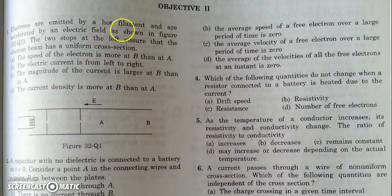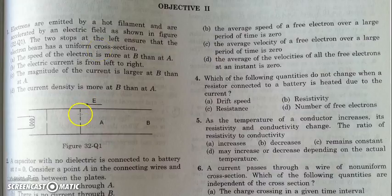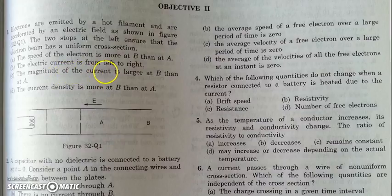In this video we will be discussing objective 2 of current electricity from HC Verma. In the first question, electrons are emitted by a hot filament and accelerated by a field toward the right, so the current is toward the left — opposite to electron flow. Since the beam has a uniform cross-section, all ejected electrons reach both A and B, so the number of electrons passing per unit time through A and B will be the same, and since the area is the same, current density will also be the same at both points.